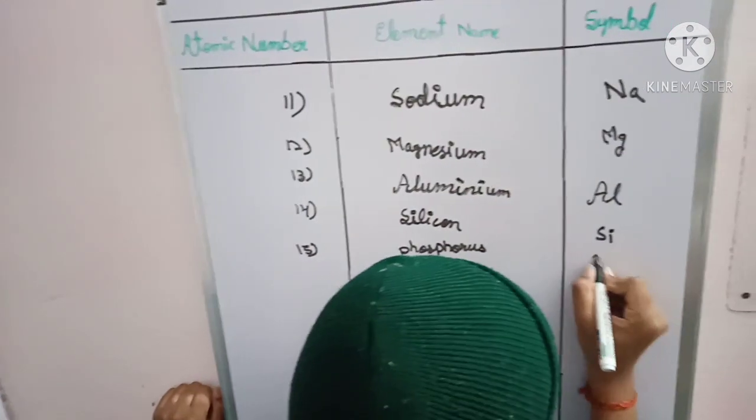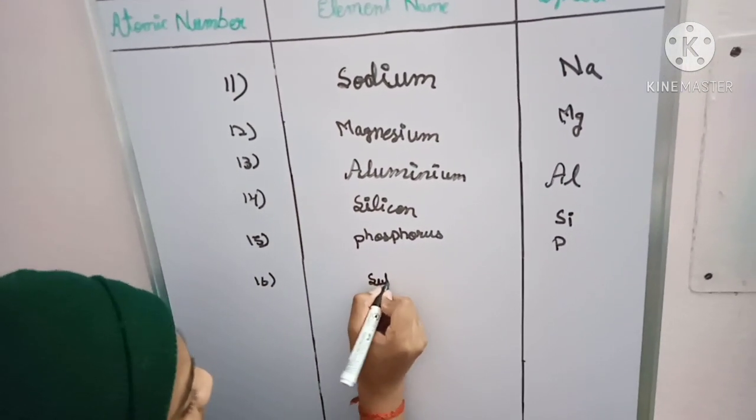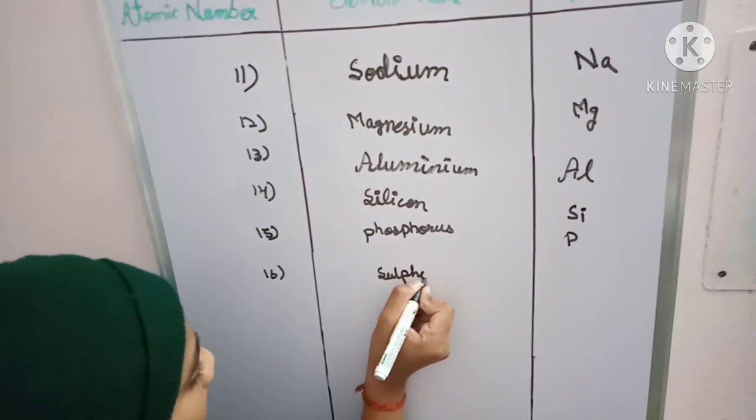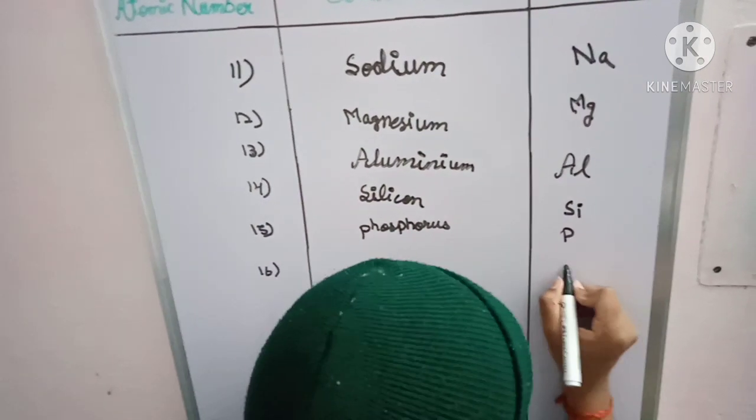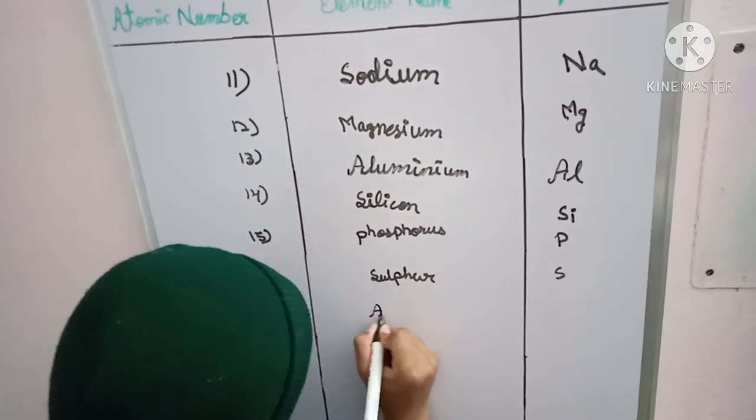16th one is sulfur, symbol is S. 17th one is argon, symbol is Ar.